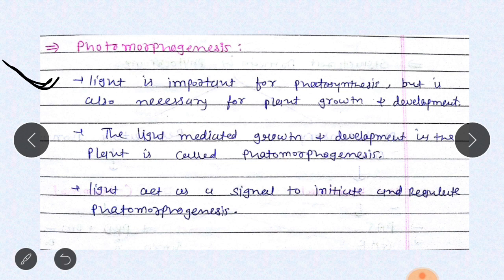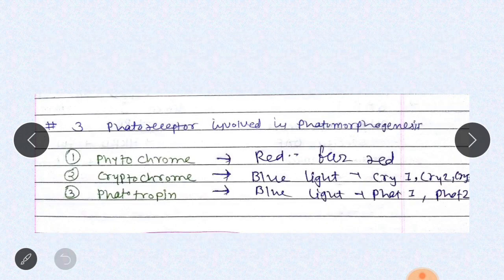Light is responsible for plant growth, development, and formation of different organs. The light-mediated growth and development in the plant is called photomorphogenesis. Light acts as a signal to initiate and regulate photomorphogenesis. Three types of receptors are found in plants: phytochrome, which is a red and far-red light receptor; cryptochrome, which is a blue light receptor with three types — CRY1, CRY2, and CRY3; and phototropin, also a blue light receptor with PHOT1 and PHOT2.